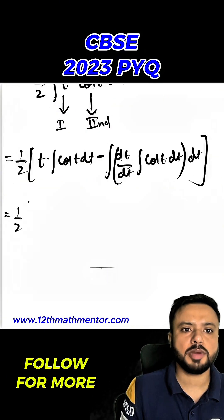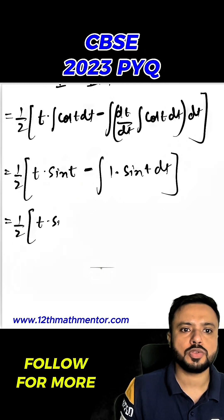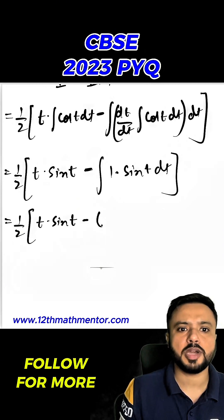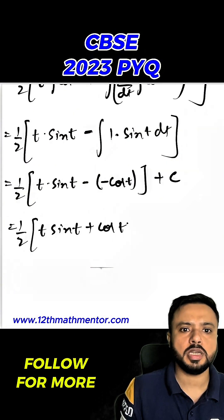I can simplify it: 1/2 t sin t, integral of cos t is sin t, minus integral of 1 times sin t dt. It would be equal to 1/2 times t sin t minus, sin t integral is minus cos t. So minus cos t plus c. That means 1/2 times t sin t plus cos t plus c.